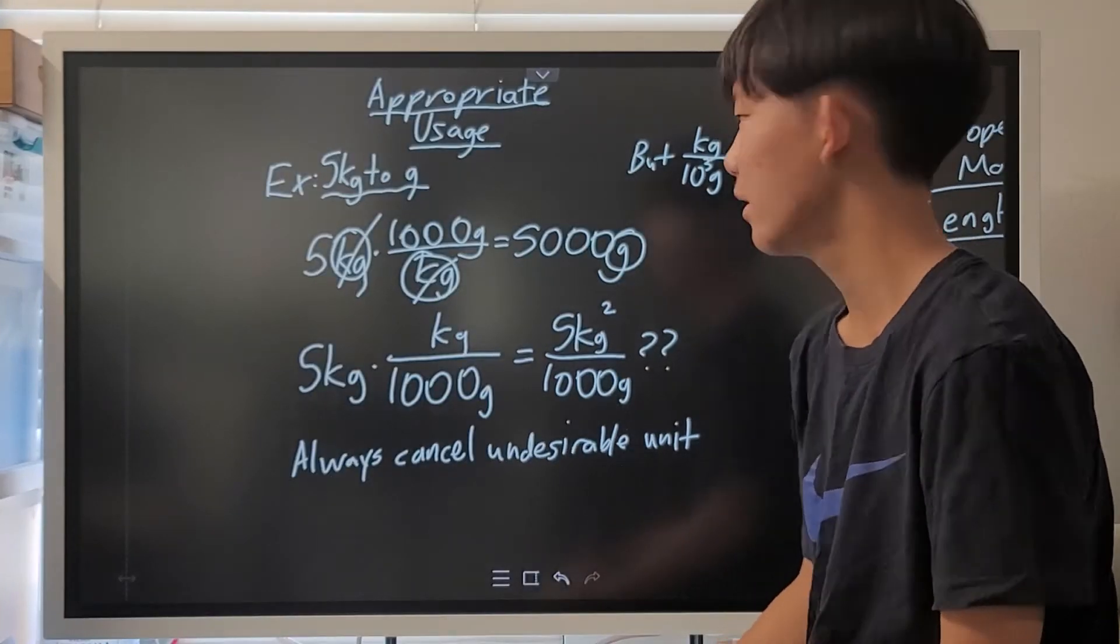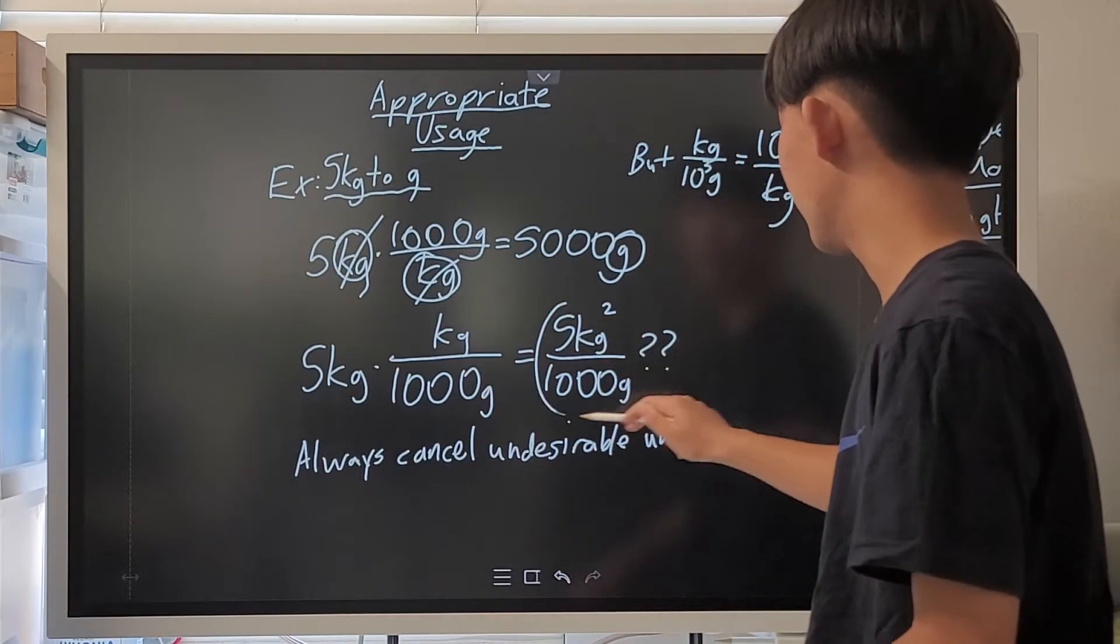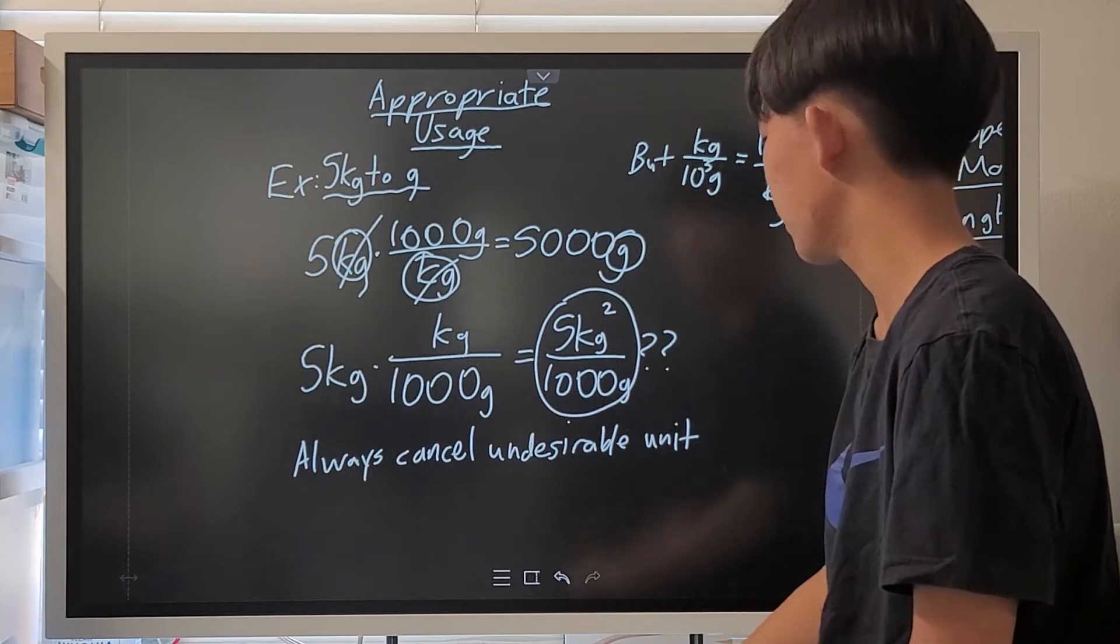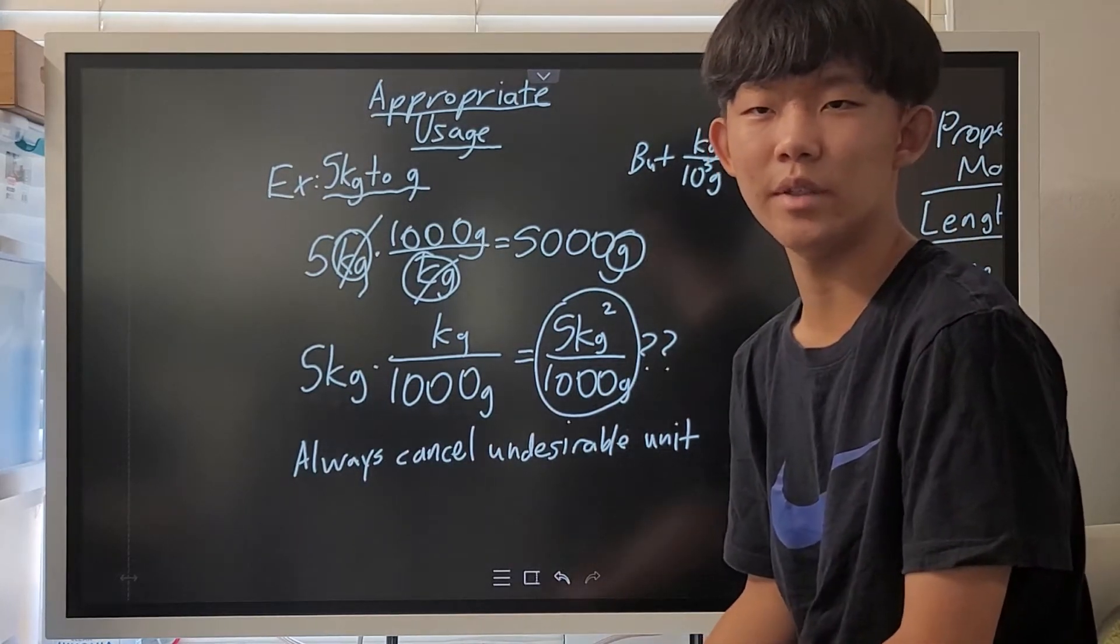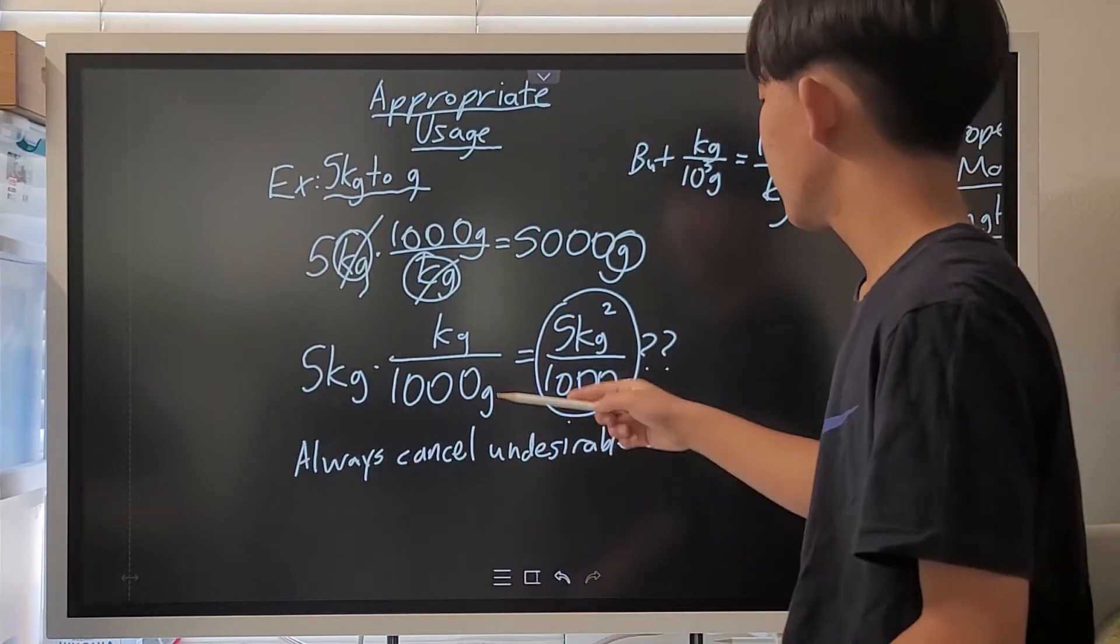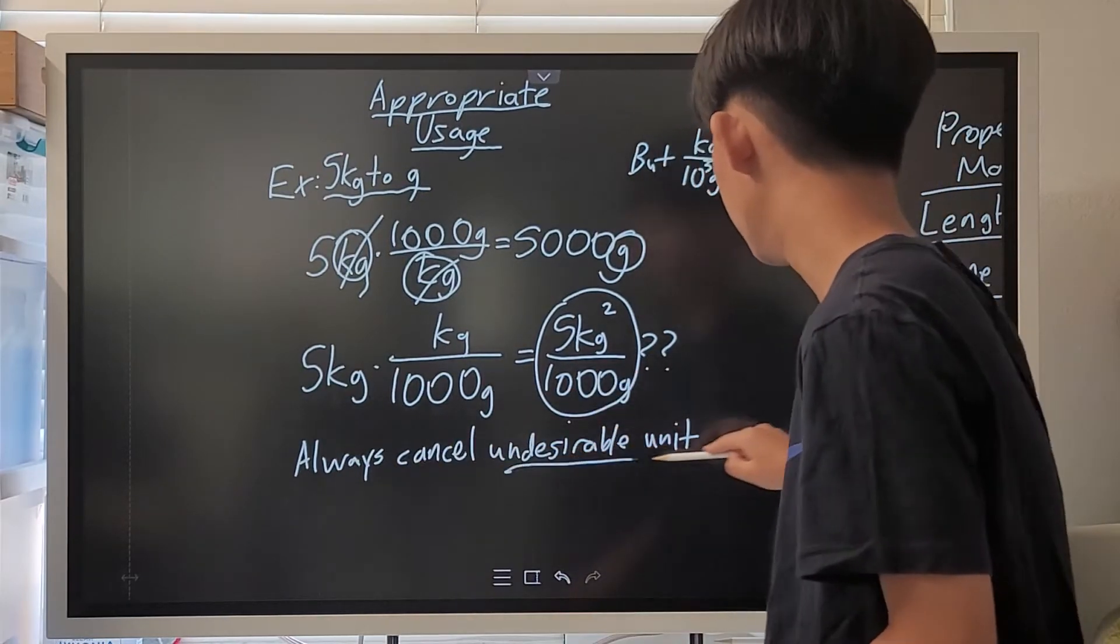However, if you use it the wrong way, you're going to get this weird thing called 5 kilograms squared per 1000 grams, which is utterly useless and meaningless. So, always cancel out the undesirable unit.